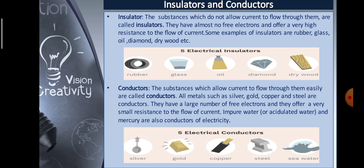Conductors are substances which allow current to flow through them easily. All metals such as silver, gold, copper, and steel are conductors. They have a large number of free electrons and offer a very small resistance to the flow of current. Impure water or acidulated water and mercury are also conductors of electricity.